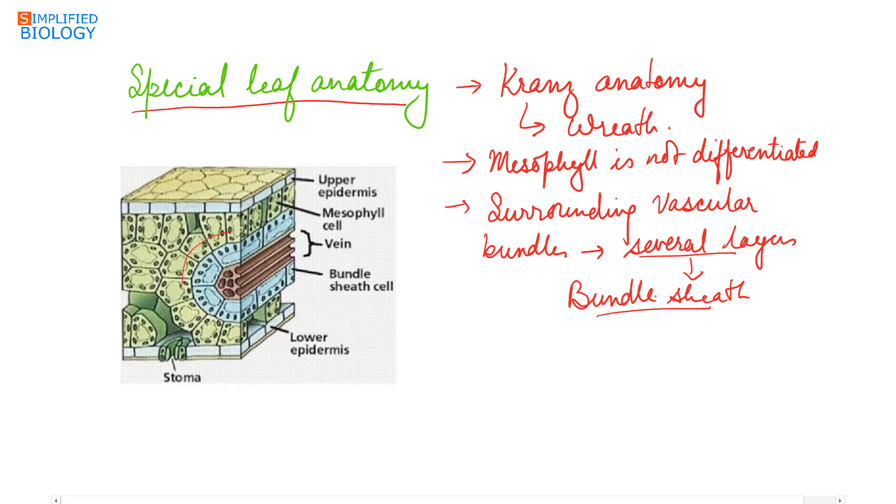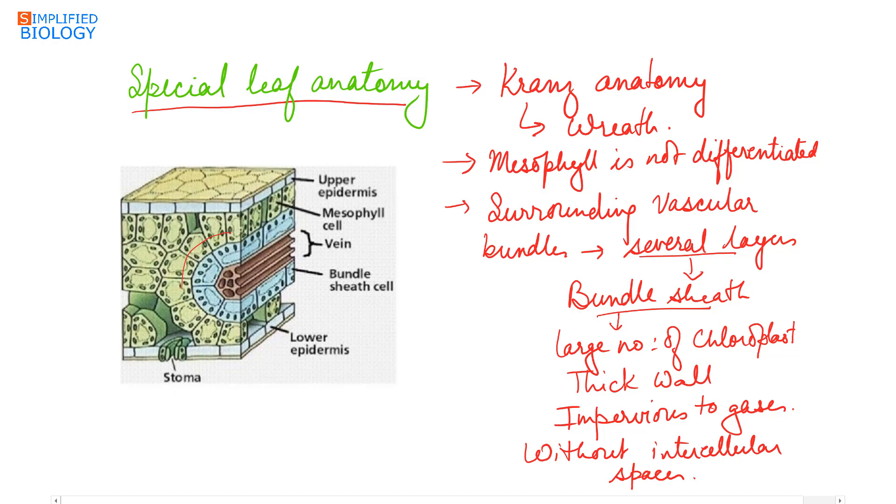The bundle sheath cells are of large size, having a large number of chloroplasts. They have thick walls and are impervious to gases, meaning they are impermeable to gases and are without intercellular spaces. This is the bundle surrounding which are the large sized bundle sheath cells of several layers, and outer to which lie the mesophyll cells. This is the structure of a leaf showing Kranz anatomy.